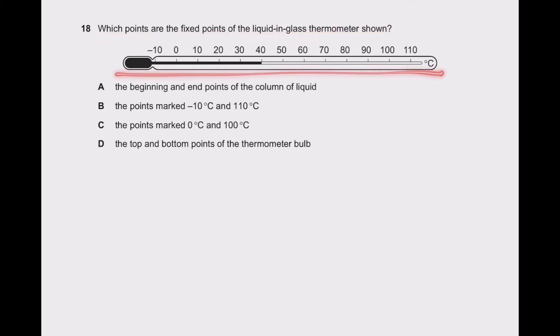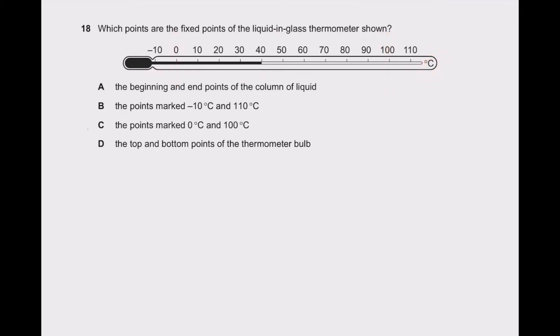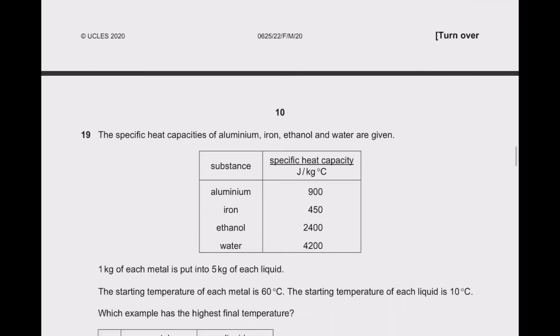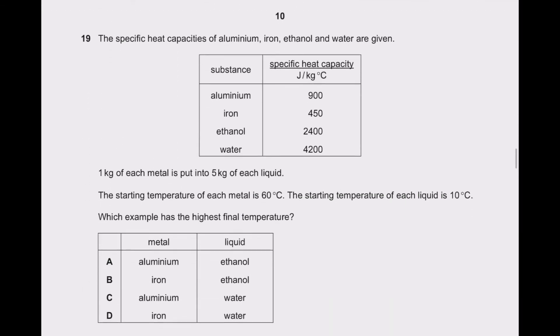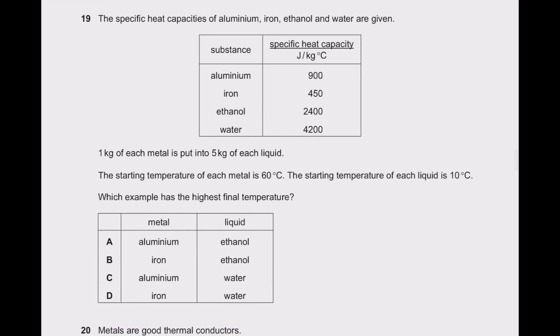Question 18: which points are the fixed points of a liquid-in-glass thermometer? The thermometer is in degrees centigrade, so 0 and 100 are the fixed points. Option C is the answer.